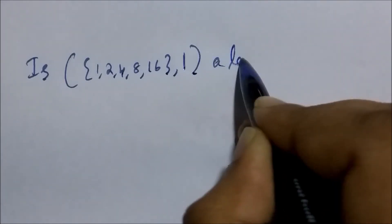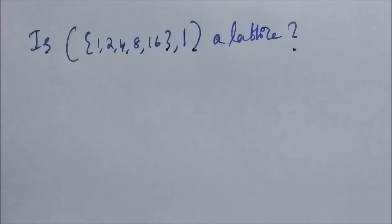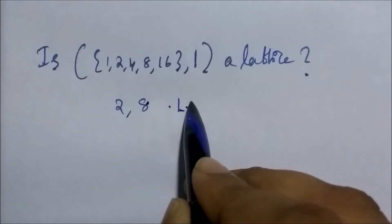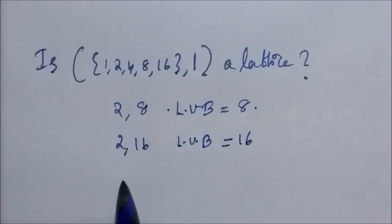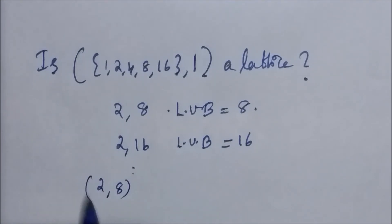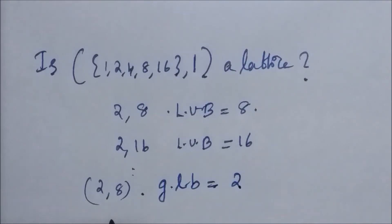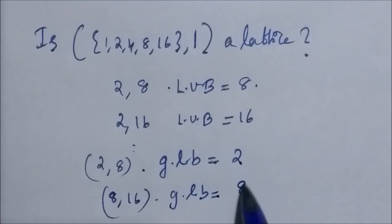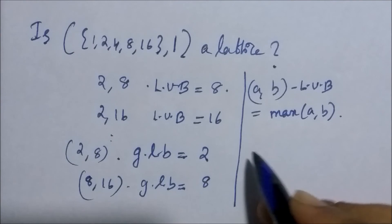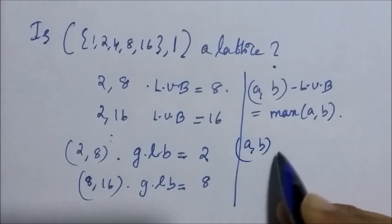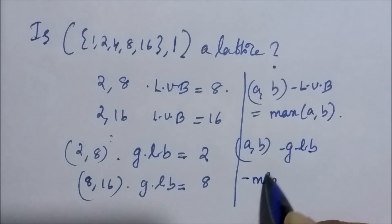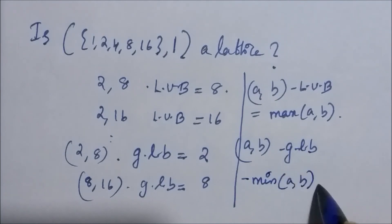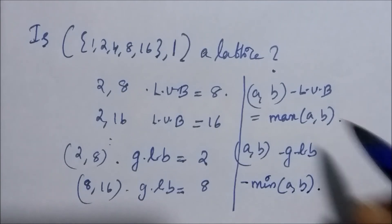Is the partially ordered set ({1, 2, 4, 8, 16}, divides) a lattice? Yes, because for any two elements taken from this set, the least upper bound is the larger of the two elements, and the greatest lower bound is the smaller of the two elements. Since every pair has both a LUB and a GLB, this is a lattice.